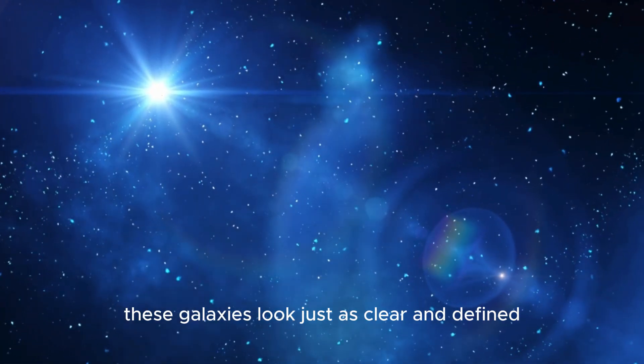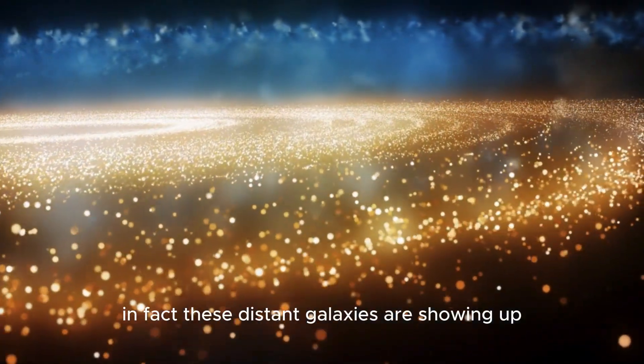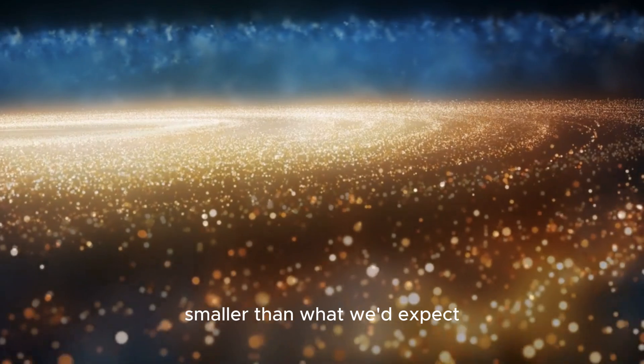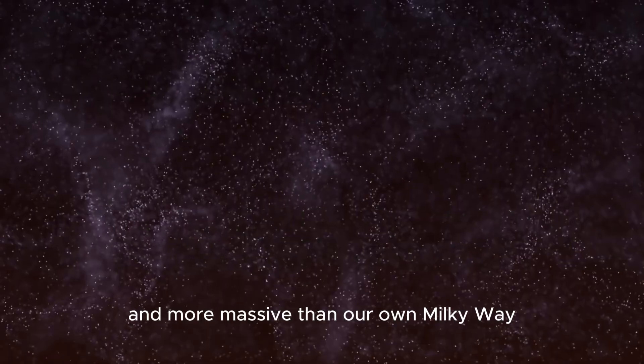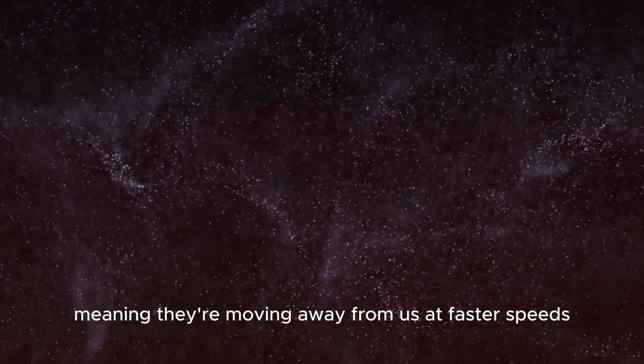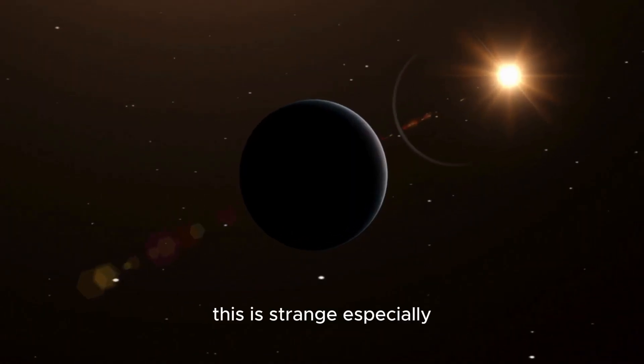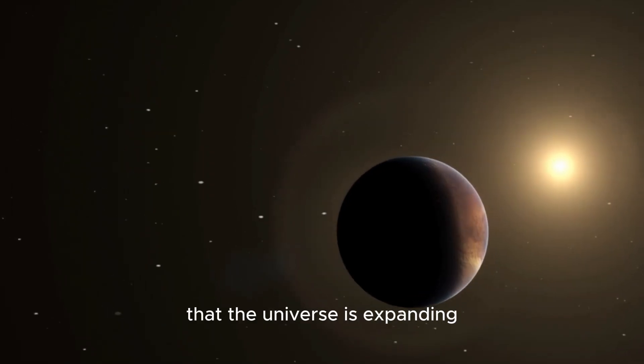These galaxies look just as clear and defined as if they were right next to us. In fact, these distant galaxies are showing up smaller than what we'd expect, despite being brighter and more massive than our own Milky Way. Some of these galaxies also have higher redshifts, meaning they're moving away from us at faster speeds. This is strange, especially if we're working under the assumption that the universe is expanding.